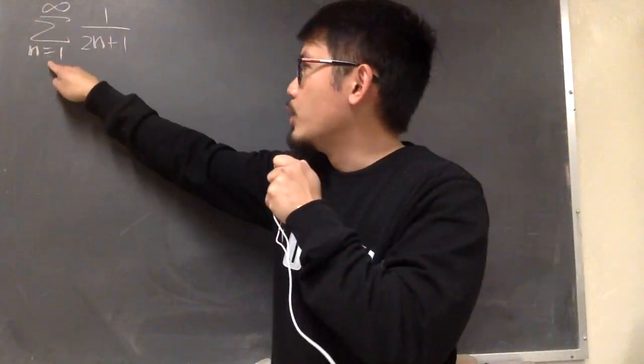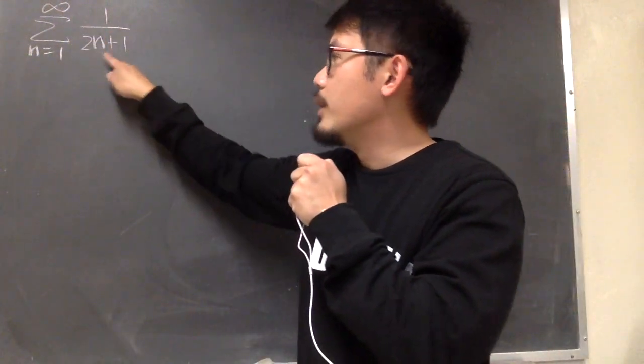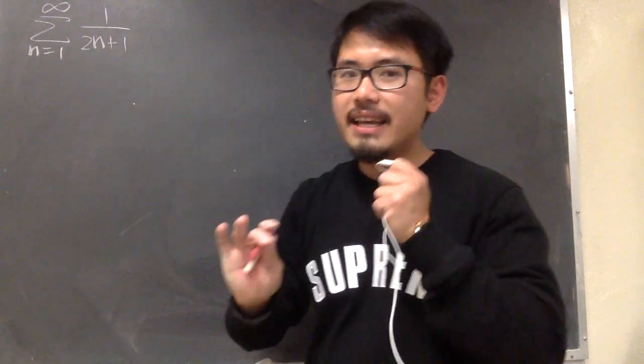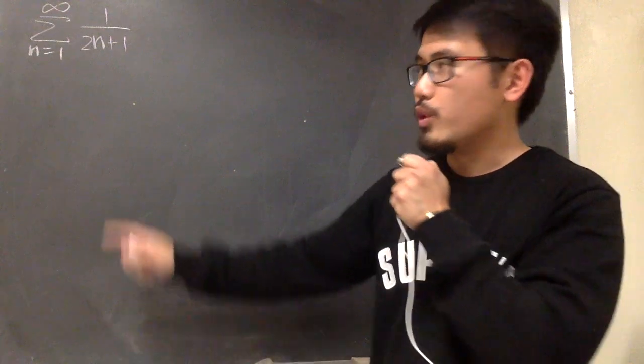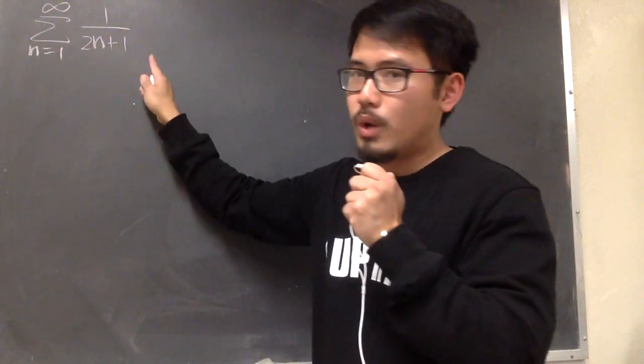Converge or diverge: sigma as n goes from 1 to infinity, 1 over 2n plus 1. This is not an alternating series. There's no negative 1 to the nth power, right? So we focus on this only, 1 over 2n plus 1.